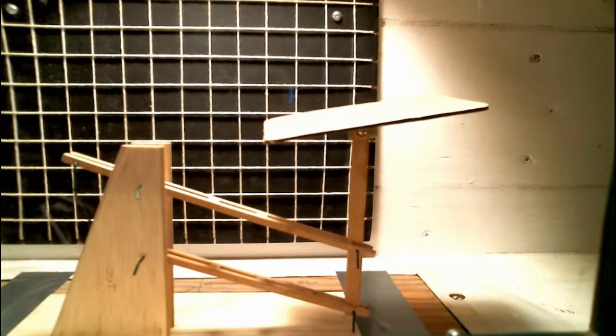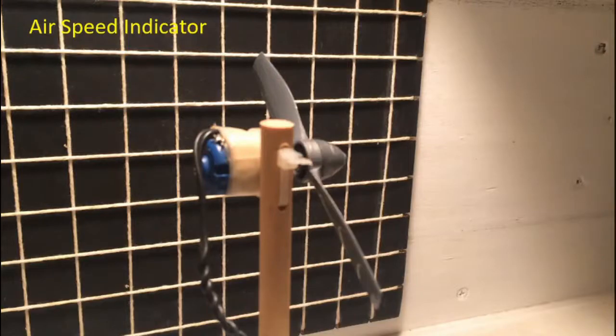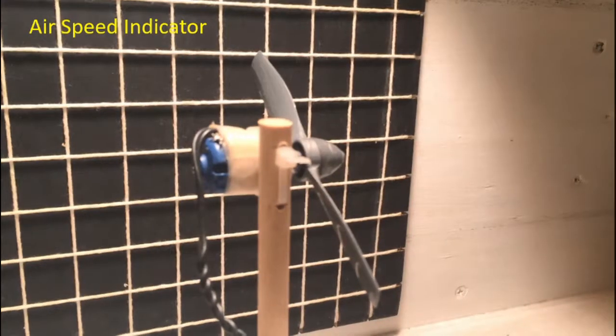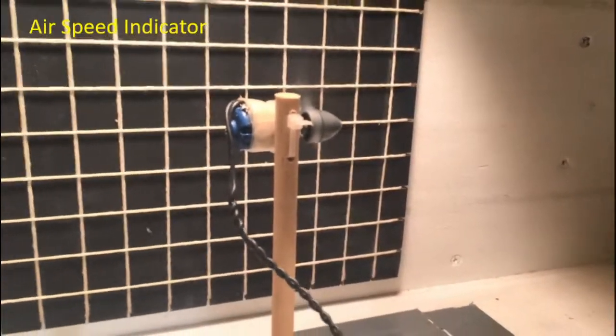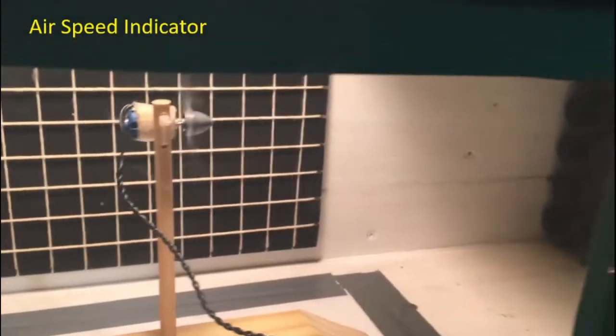Here's my simple airspeed indicator mounted inside the wind tunnel. It's a propeller attached to a small electric motor. When the propeller spins, it makes the motor become a generator and generates a DC voltage. When the airflow turns on, it spins the propeller and then generates a voltage which is related to the speed of the airflow in the wind tunnel.